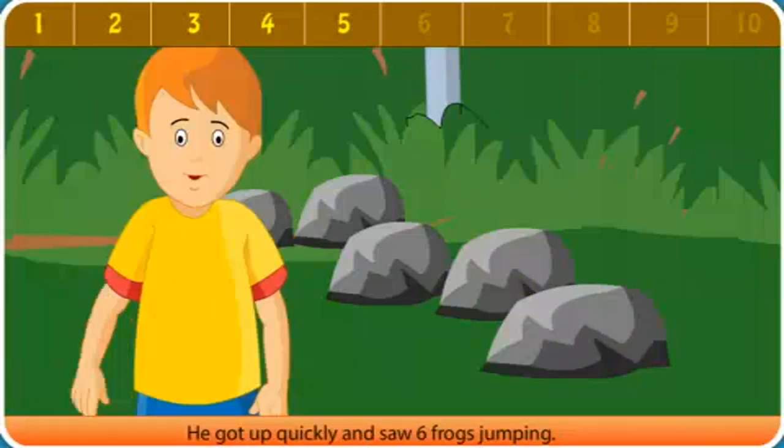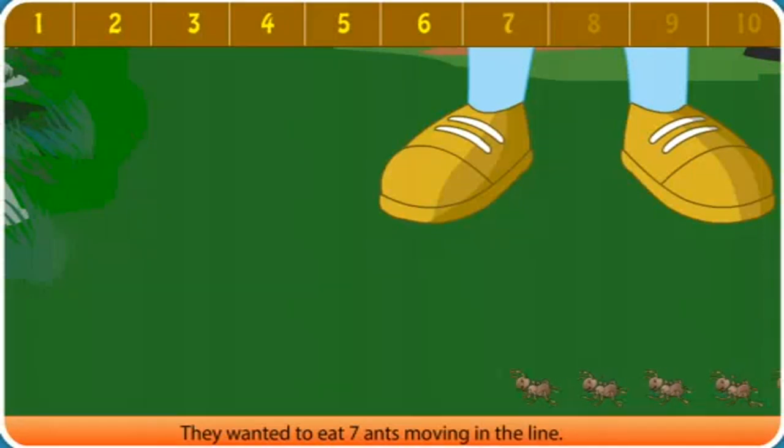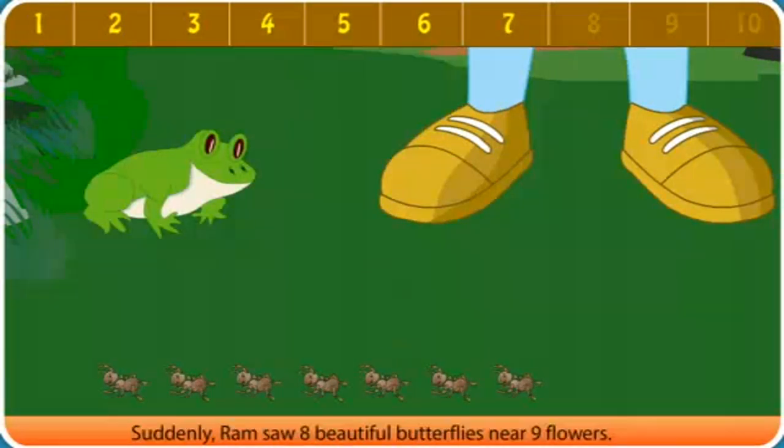He got up quickly and saw six frogs jumping. They wanted to eat seven ants moving in the line. Suddenly,